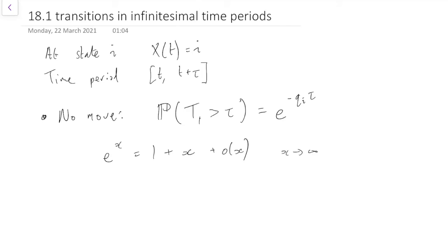So in terms of this we have 1 - qi*tau plus little o(tau) terms. So the probability we make no move is 1 - qi*tau + o(tau).